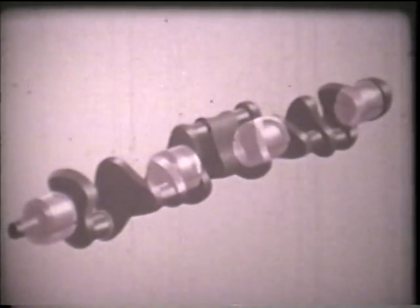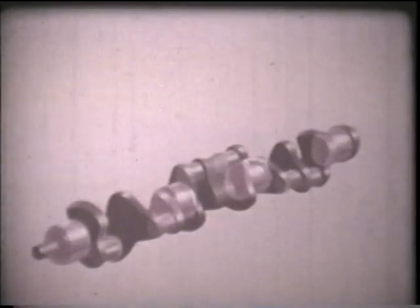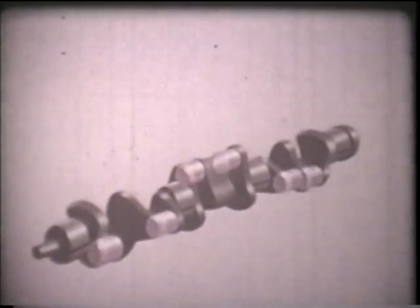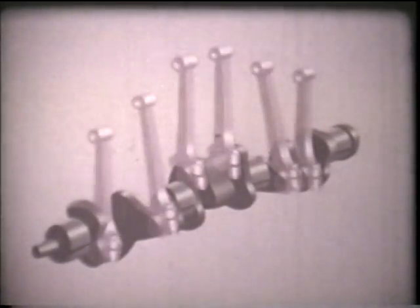These main bearings are inserted between the crankshaft and the members of the crankcase which support it. The connecting rod bearings join the connecting rods to the crankshaft.